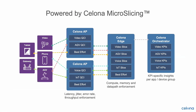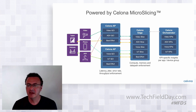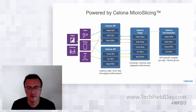For example, you can have IP cameras with a guaranteed bandwidth of 5 megabits per second uplink, or you can have automated guided vehicles with a guaranteed end-to-end latency of 40 milliseconds for remote control applications. All of these SLA requirements are translated into real-time compute, memory, and datapath enforcement on the Celona Edge, isolating the datapath for different flows.